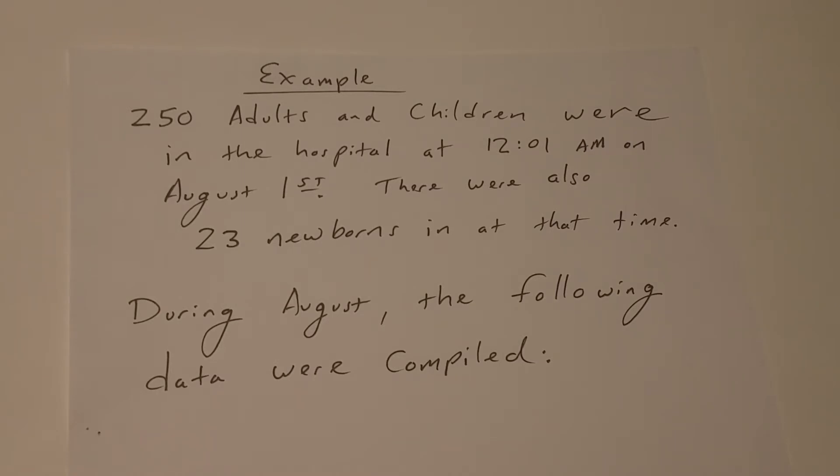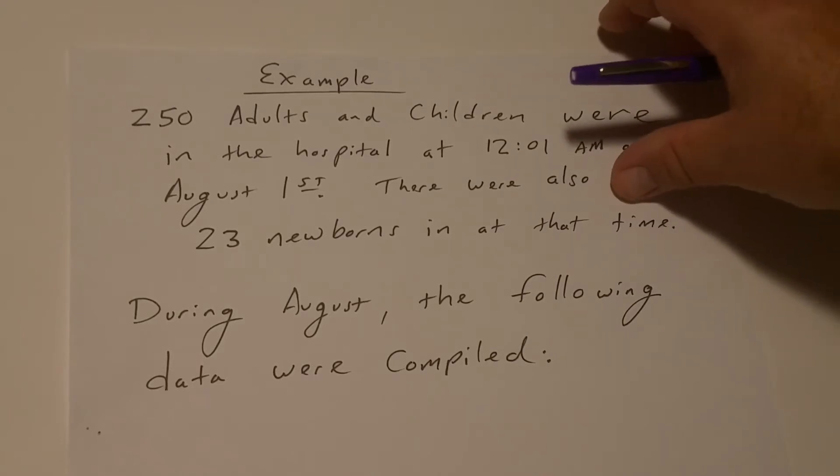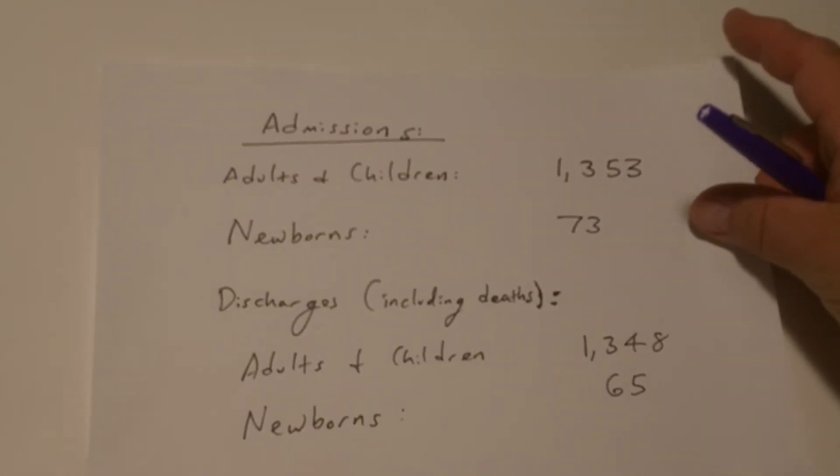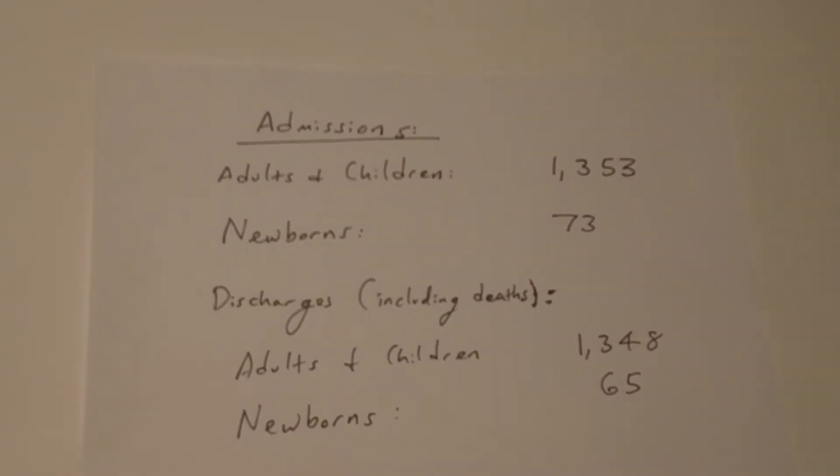There was also 23 newborns at that time. During August, the following data were compiled and note that often times the newborns are kept separate in the calculations. But here's the data that's compiled.